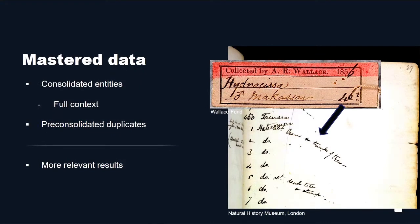Data mastering is about giving you the full context. It means you can make your search interfaces simpler — instead of having to say look in this record, then make sure you look in that record and bring them together, if you master them together, you can just say look here, look in this one place. Or you get the full context of your answer so you can understand it. You get rid of duplicates — your search interface doesn't have to worry about that, and customers don't have to plow through duplicative answers. More relevant results. This is one of Wallace's tags, and that little number in the corner is a foreign key to his notebook. If we were to master these, now we can ask questions and get a single consolidated answer.